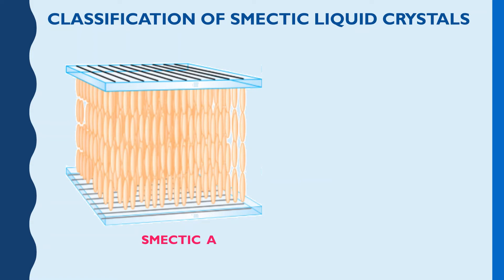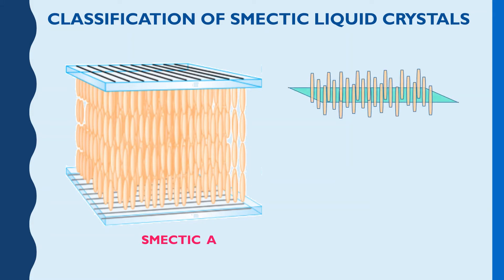Now, depending on the molecular arrangements within the layer and the extent of interlayer correlations, the smectic mesophases are further classified into three different types which can be named as number one, smectic A liquid crystal. Now, what is smectic A liquid crystal? Let's see. In smectic A liquid crystal, actually what happens, the director lies along the layer at an angle of 90 degrees.